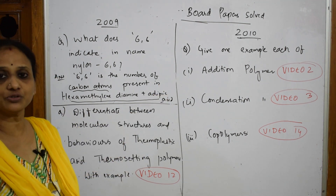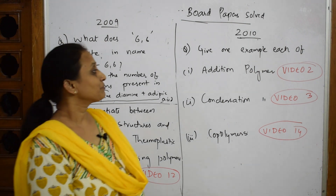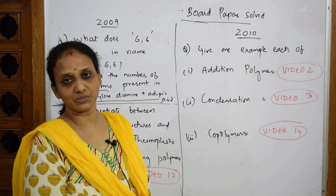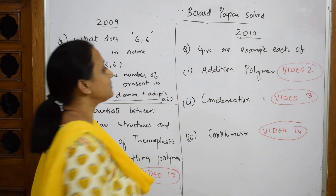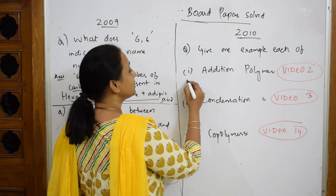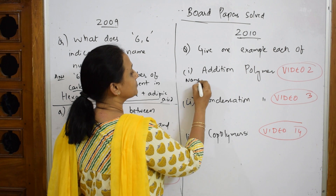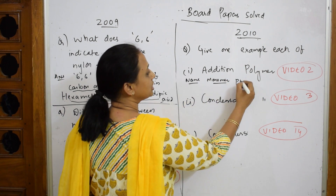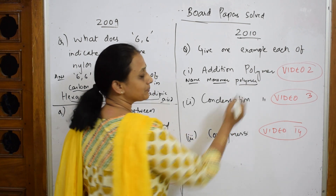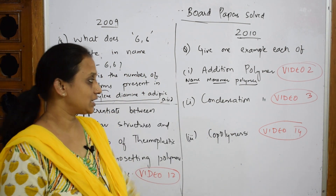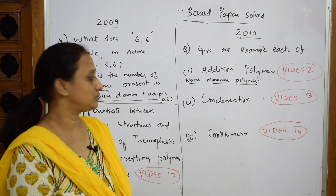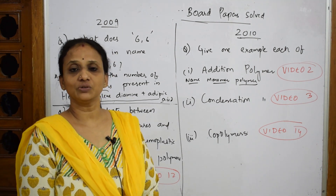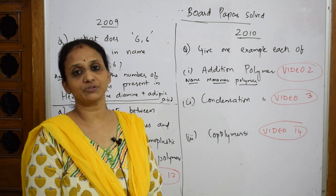When I come to the 2010 paper — give an example for three marks. Whenever they ask you for examples, remember to write the structure as well. First write the name of the example, then write the monomer, then write the polymer — only then will you get full marks. Addition polymers are covered in video number two, addition and condensation polymers in video number three, and co-polymers in video number 14. Please watch those videos for a clear explanation.